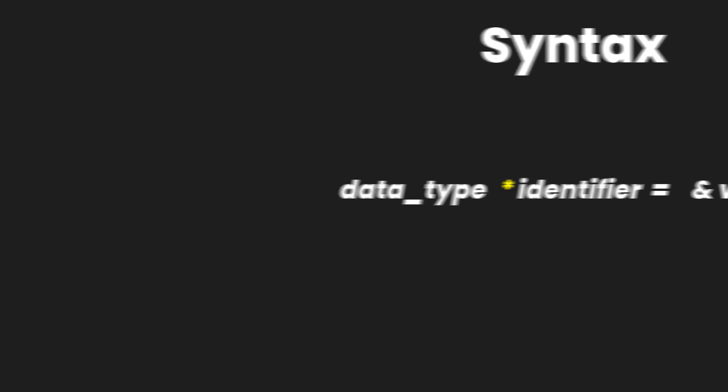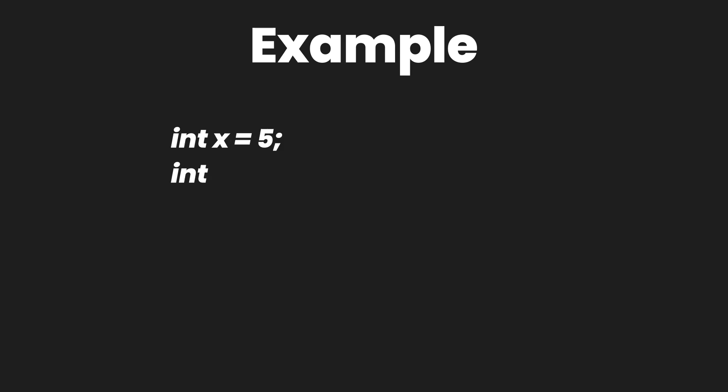If I were to give you an example — suppose we want to create a pointer variable that is going to refer to an integer value — we would write the following: we would write 'int' to define the data type, follow it up with the asterisk symbol, and then for the name of the variable I'm going to call it 'ptr', and set it equal to some other variable, let's say 'x'.